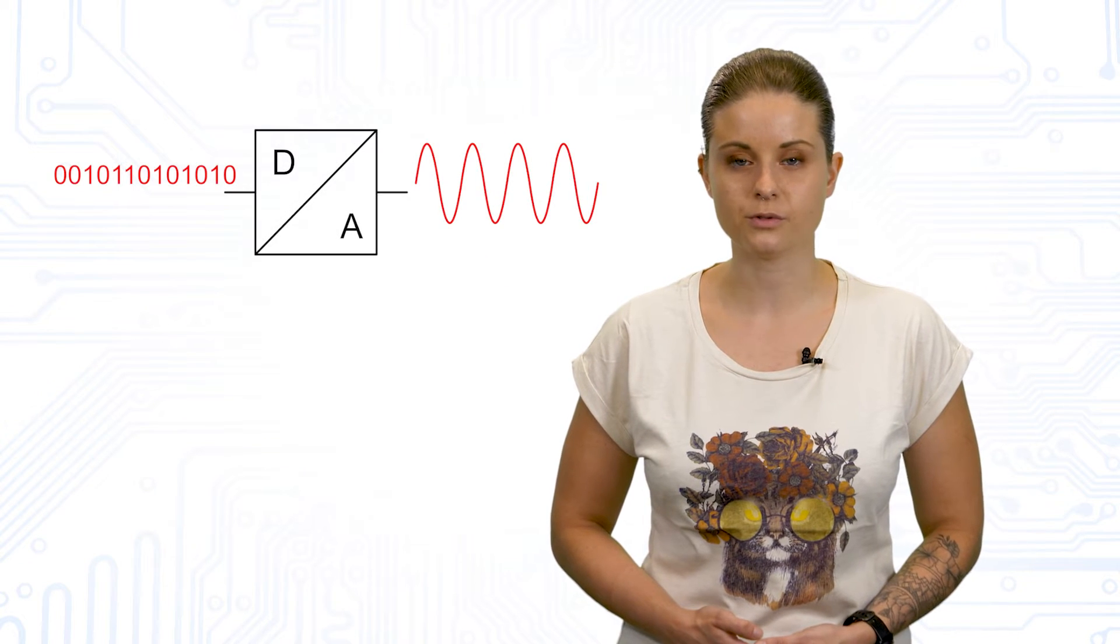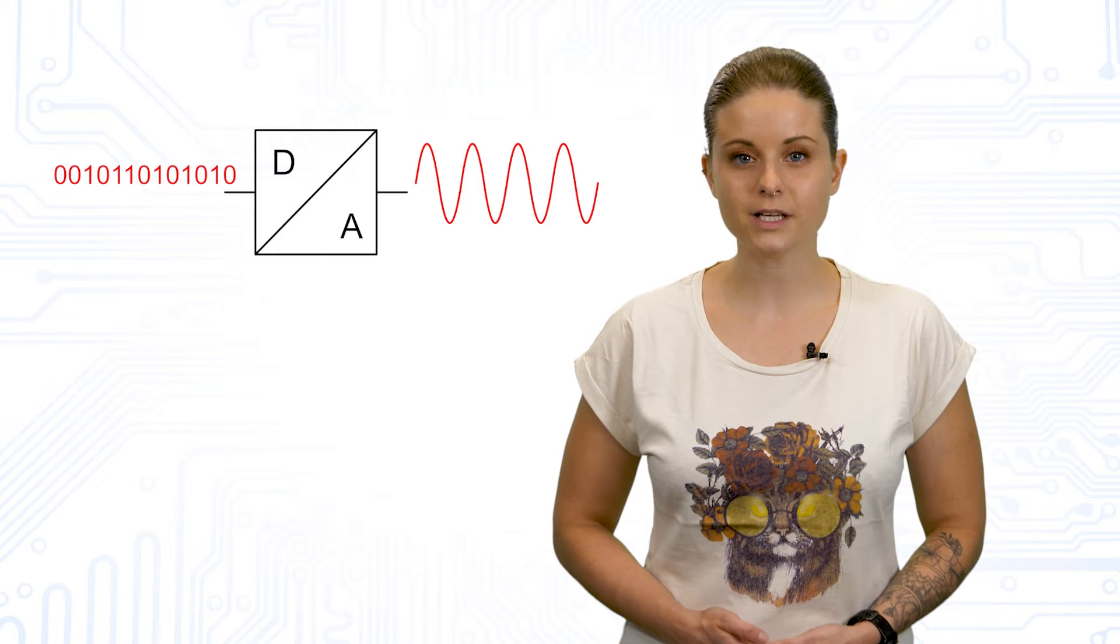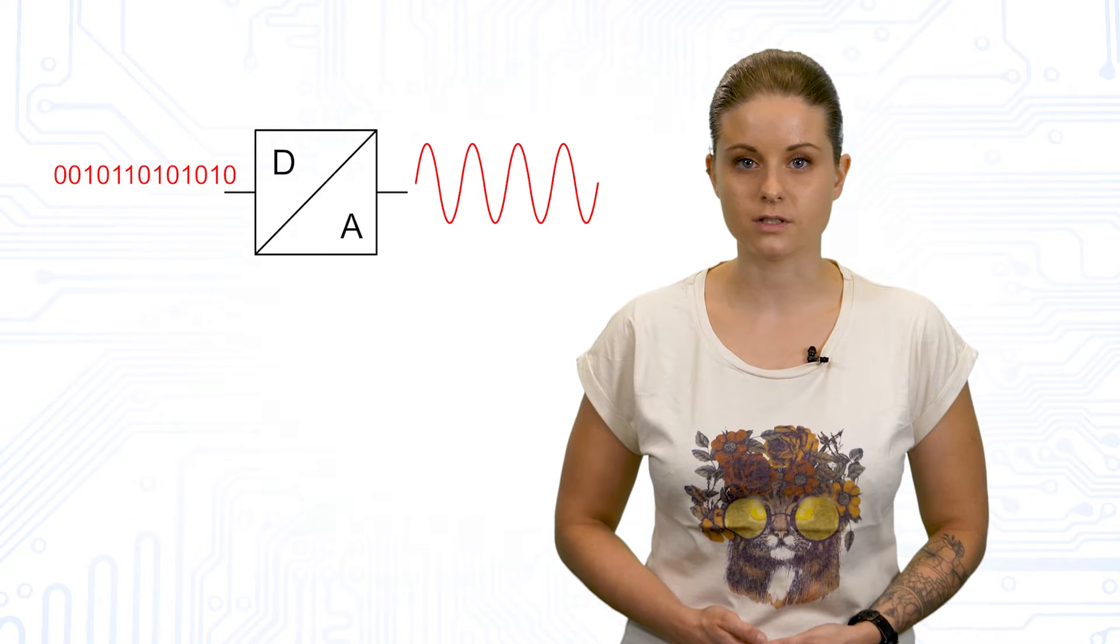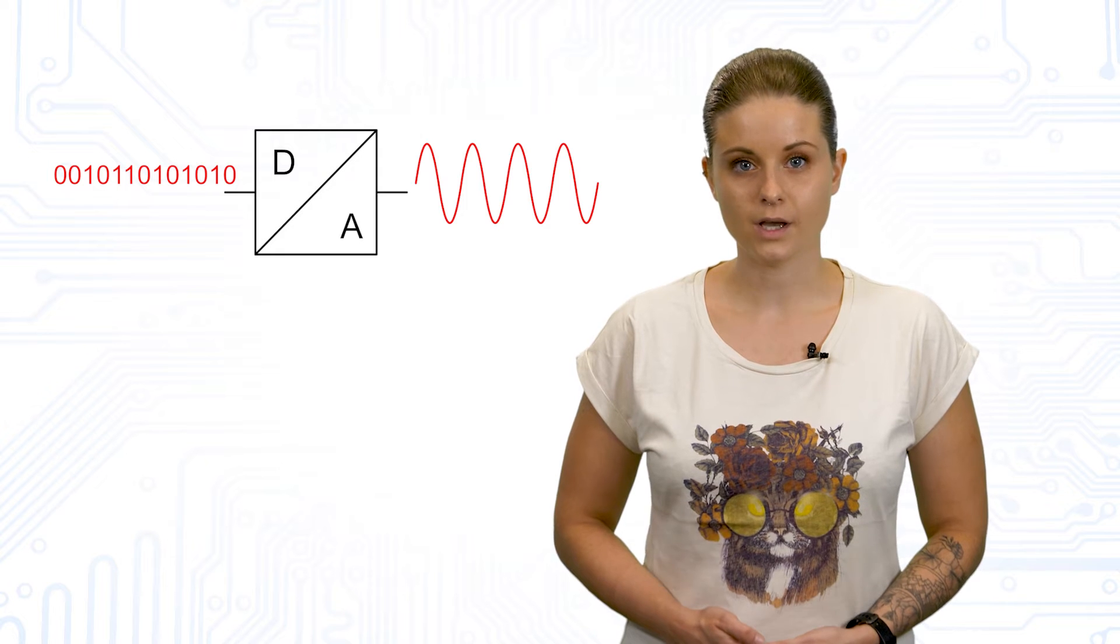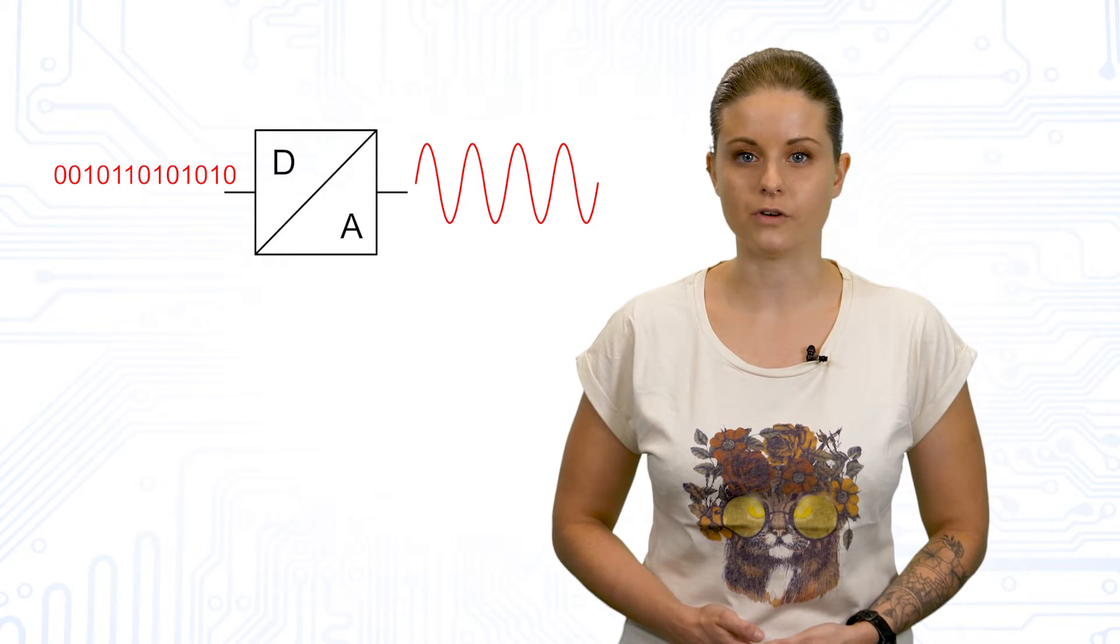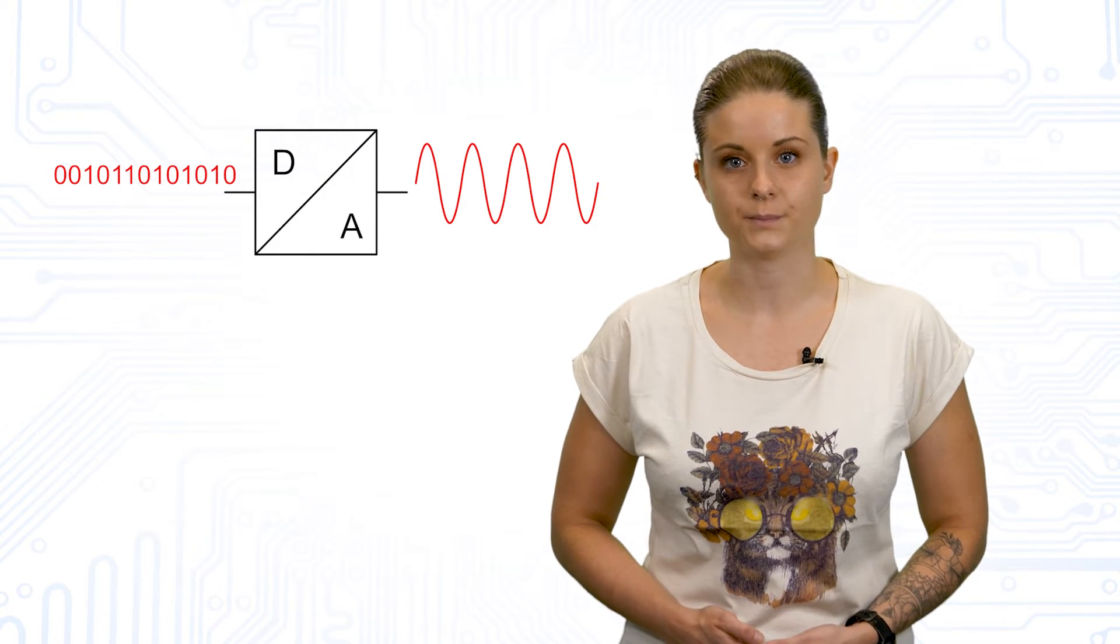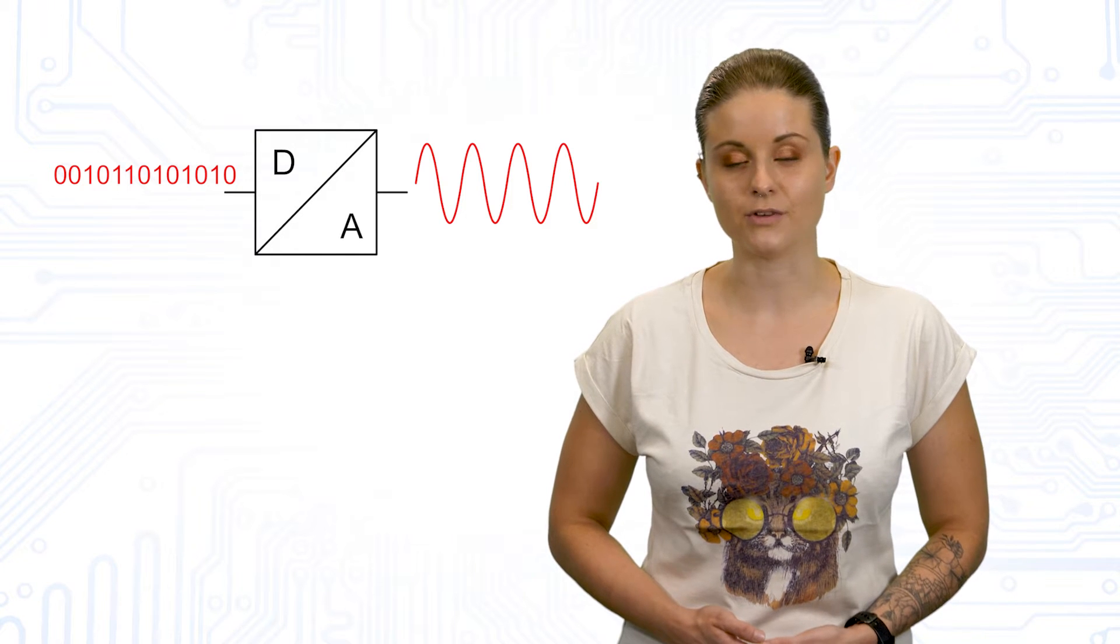In this video we will introduce an R2R DAC. Compared to the string DAC, the number of resistors needed is much smaller. For each bit of resolution, only one resistor with a value of R ohm and one resistor with a value of 2 times R ohm are needed. R can be any resistance value.